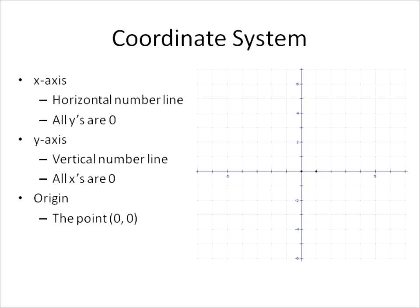The background knowledge that we're going to need is the coordinate system. So let's talk a little bit about the coordinate system. The x-axis is this horizontal line that goes right across here. It's a horizontal number line. And along this x-axis, all the y-values are 0.